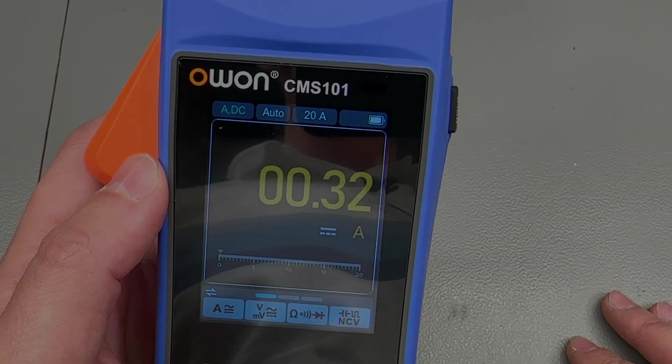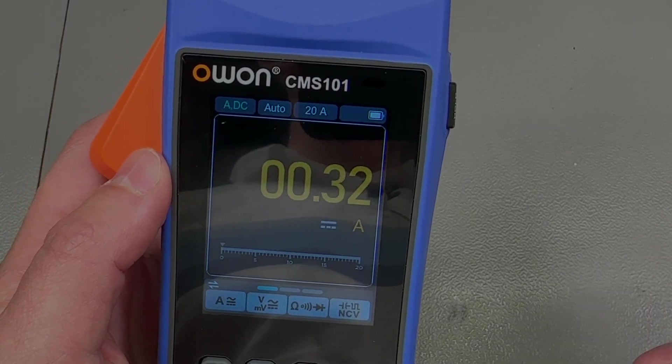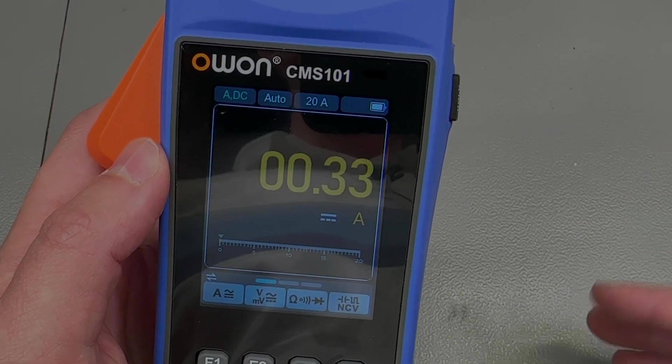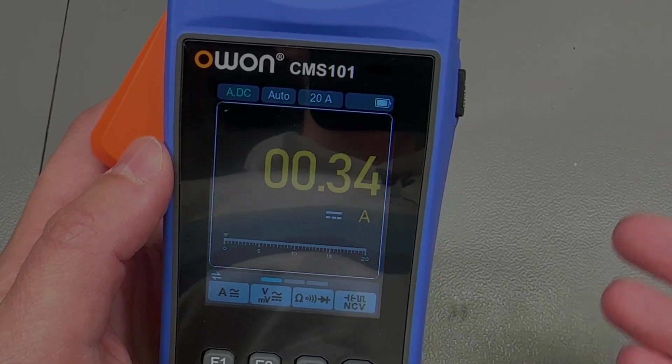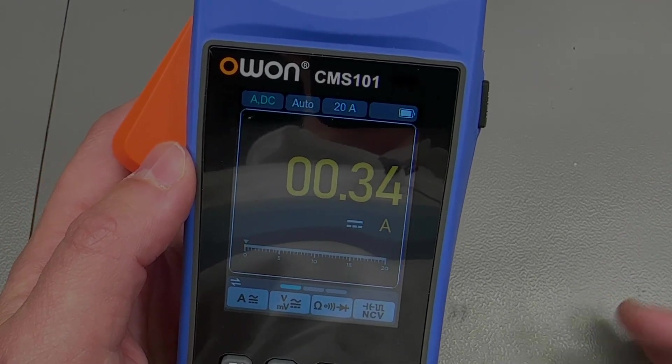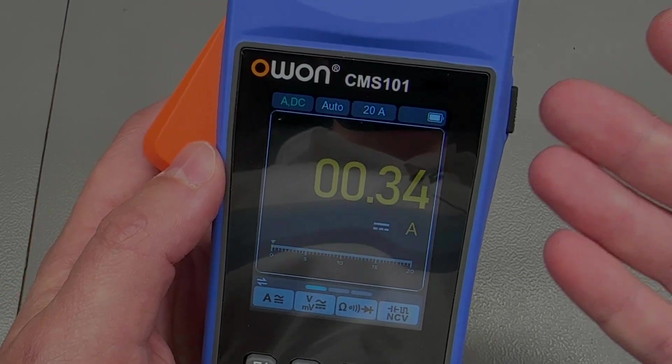The auto ranging is slow and buggy. If you switch between operating modes, sometimes it can lock up. So it would be nice if Owon could release a firmware update over Bluetooth to address these issues, but will they do that? I'm not even sure that's possible.